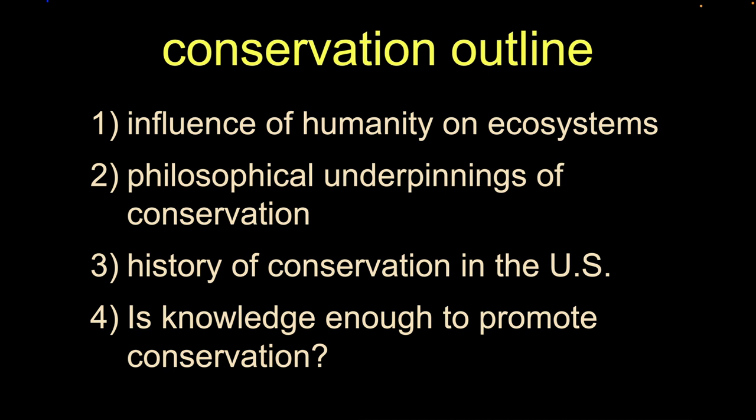We'll go over this real quickly to get the broad strokes, and then we'll go through some of the key points in the history of the conservation movement and how it came to be in the US. We'll end with a question: knowing all this, knowing that it's possible for us to degrade ecosystems and that we've evolved these approaches and structures, is that enough? Is just knowing that we might cause a problem enough to avoid future problems?